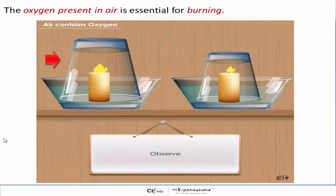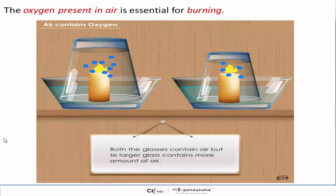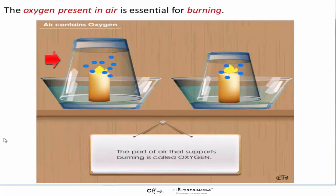The tumbler on the left is bigger and supports the burning for a longer time. This observation tells us that air contains oxygen. Both the glasses contain oxygen, but the one that contains more oxygen supports burning of the candle for a longer time. So, the part of the air that supports burning is called oxygen.